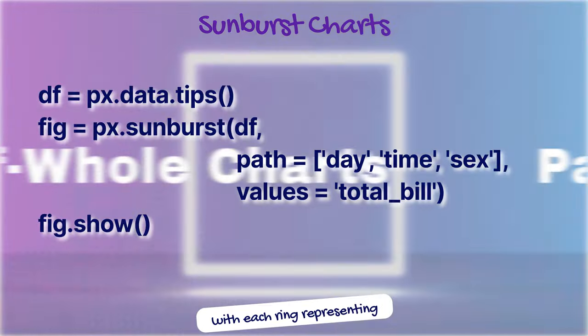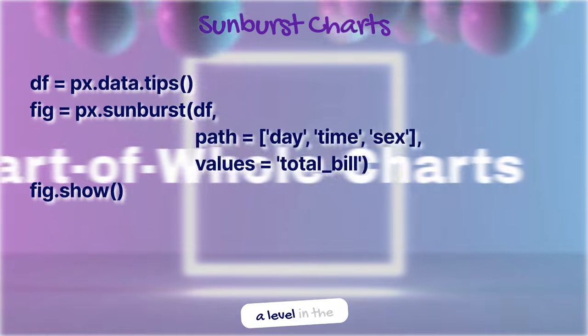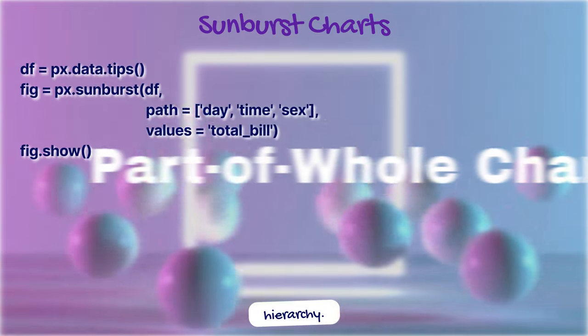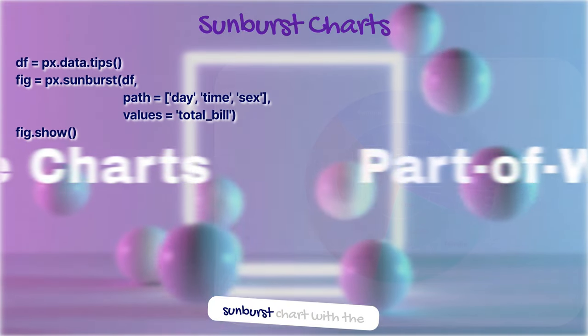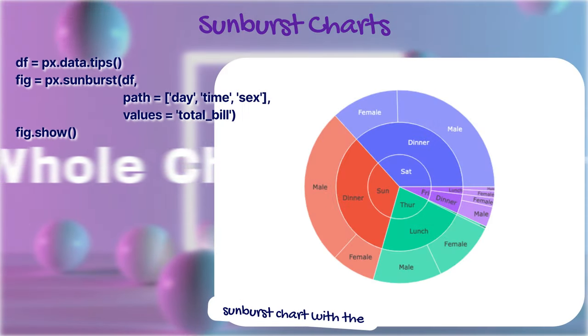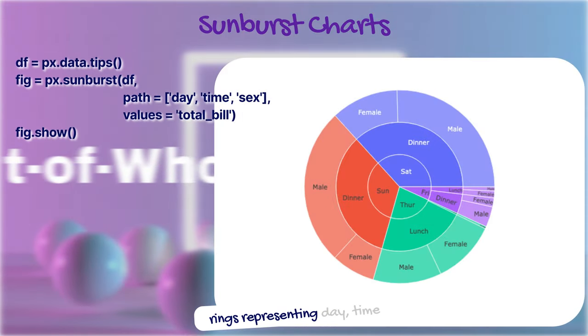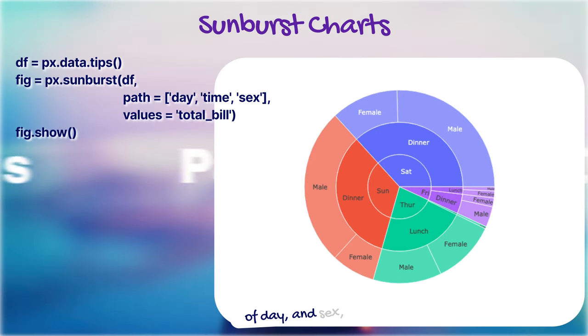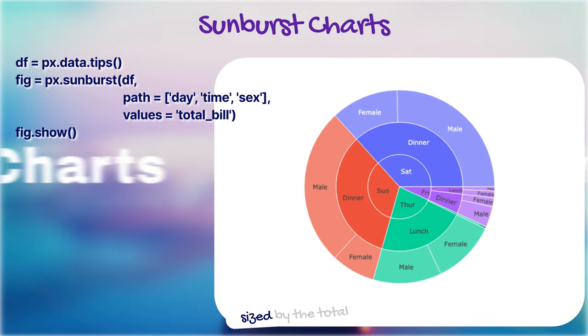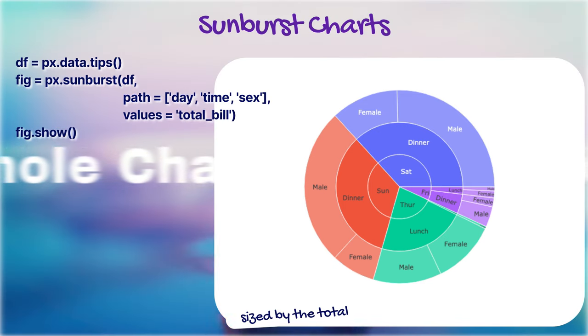Sunburst charts show hierarchical data as nested rings, with each ring representing a level in the hierarchy. This code creates a sunburst chart with rings representing day, time of day, and sex, sized by the total bill.